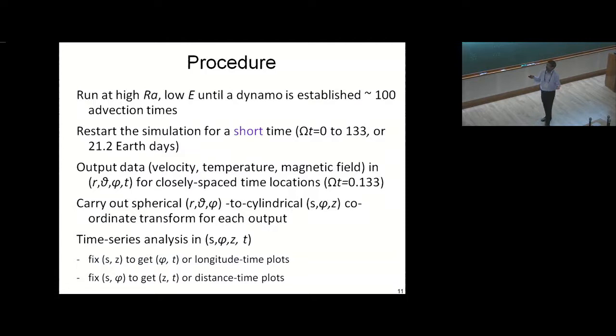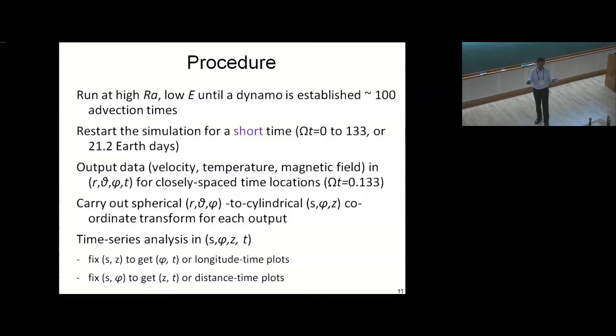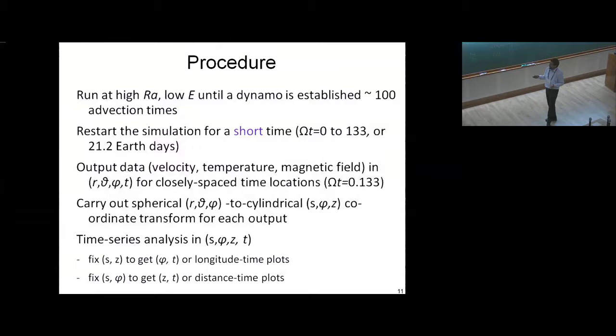We run for an omega*t of 133, equivalent to just 21 Earth days — very fast by dynamo standards, where people are used to timescales of years or decades. The output is in terms of r, theta, phi, and we transform to cylindrical coordinates s, phi, z because we are interested in what happens on the z-axis. We then do time series analysis: fixing s and z gives phi-t plots; fixing s and phi gives z-t plots.